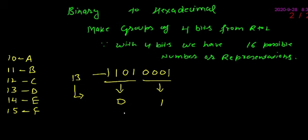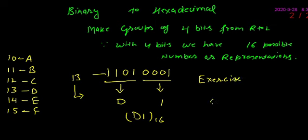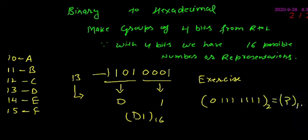इस example में जो हमारे पास hexadecimal number आएगा वो होगा D1, base 16. Again, binary to hexadecimal conversion के लिए भी आपके लिए एक exercise है, और जो answer है वो आपने YouTube comment section में लिखना है.